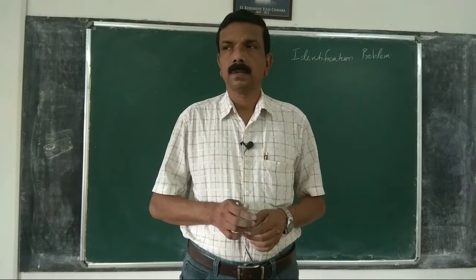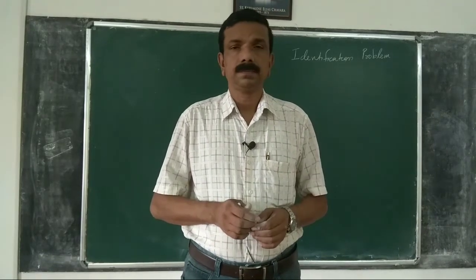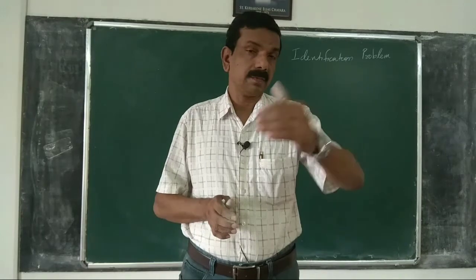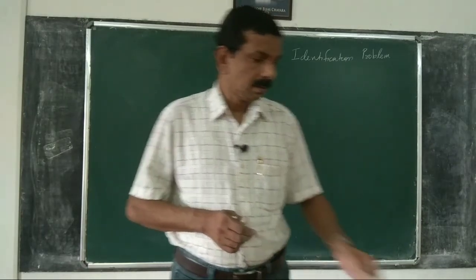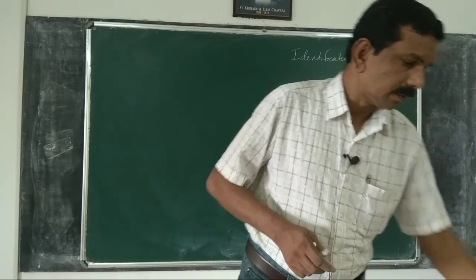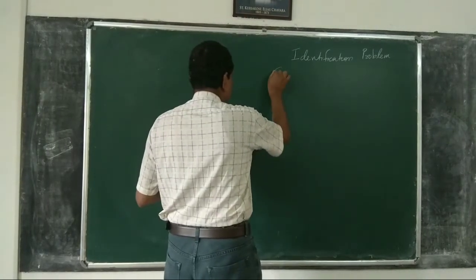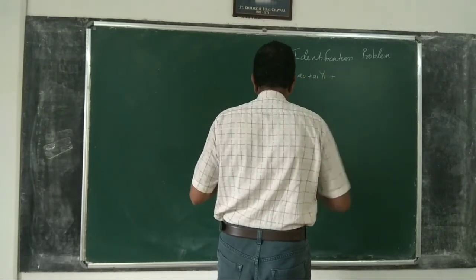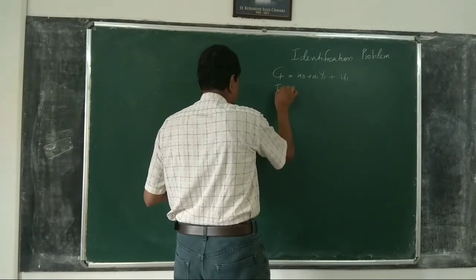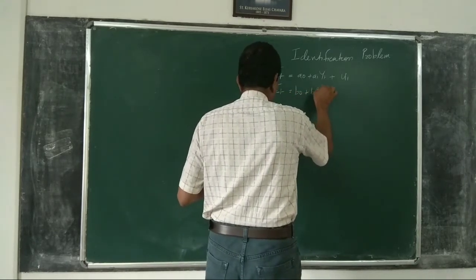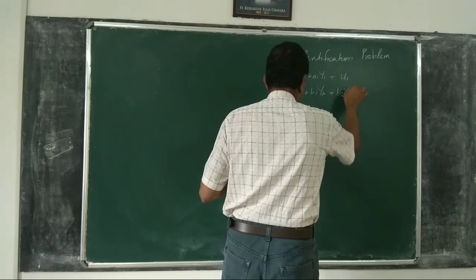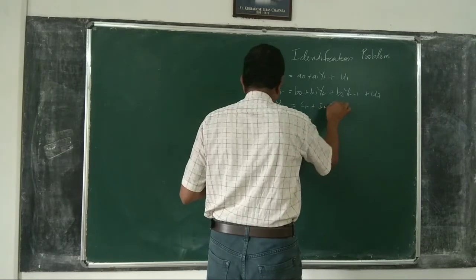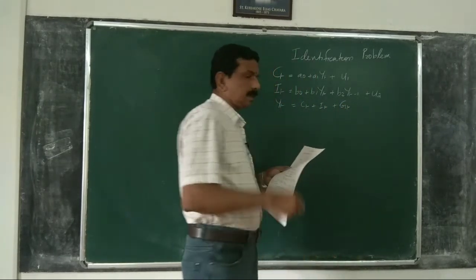Dear students, let us consider one more example to clarify a few more points about structural equations and derivation of reduced form equations. Let us consider the structural equations in a closed economy — a three-sector closed economy — as: Ct = A0 + A1·Yt + U1; It = B0 + B1·Yt + B2·Yt−1 + U2; and Yt = Ct + It + Gt.